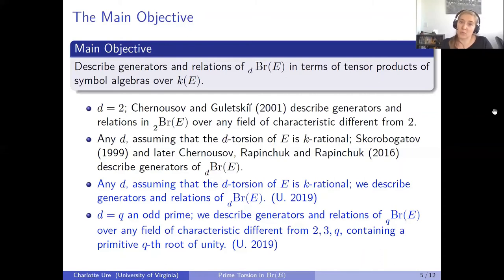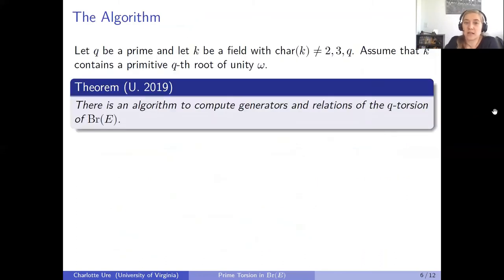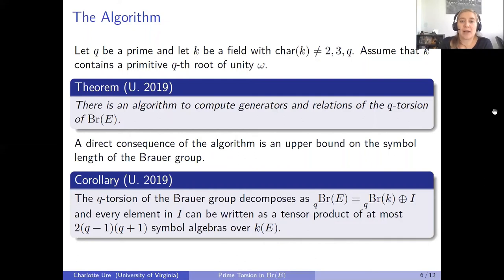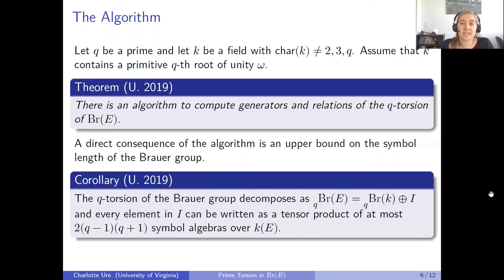There is an algorithm to compute these generators and relations, though working through it in particular examples can still require significant effort. One interesting consequence is an upper bound on the symbol length inside the Brauer group: the q-torsion of the Brauer group decomposes as the q-torsion of Br(k) plus a subgroup I, and every element in I can be written as a tensor product of at most 2(q−1)(q+1) symbol algebras over k(E). I believe this bound is far from optimal and should be improvable, as explicit examples already allow one to reduce it.